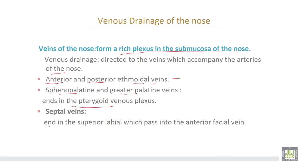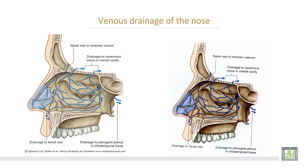The septal veins end in the superior labial vein, which passes into the anterior facial vein. The anterior and posterior ethmoidal veins enter the cranial cavity to end in the cavernous sinus. The sphenopalatine veins are directed to the pterygoid venous plexus posteriorly, and the septal veins are directed to the anterior facial vein.